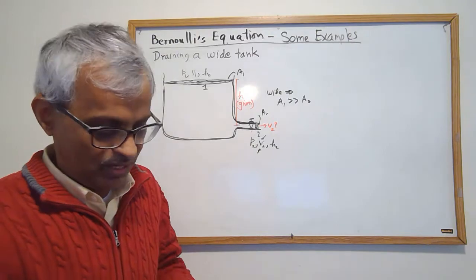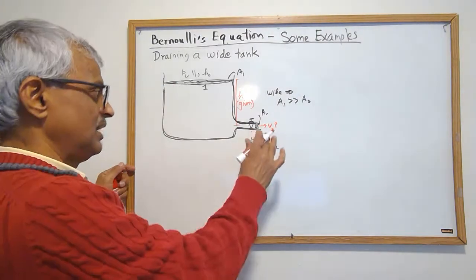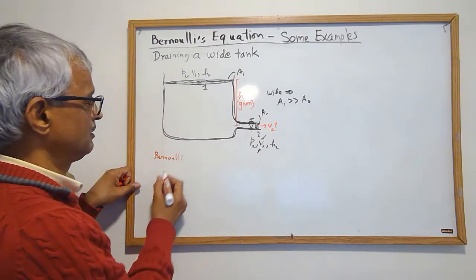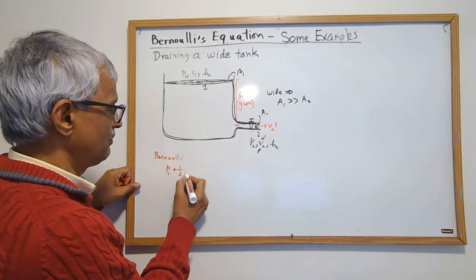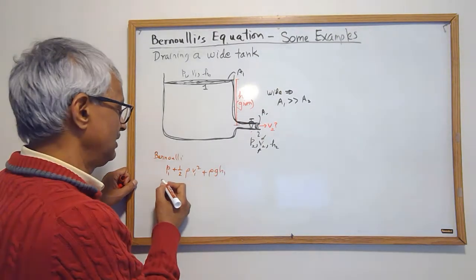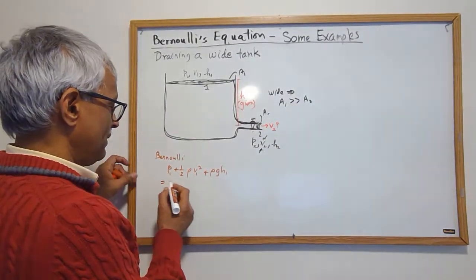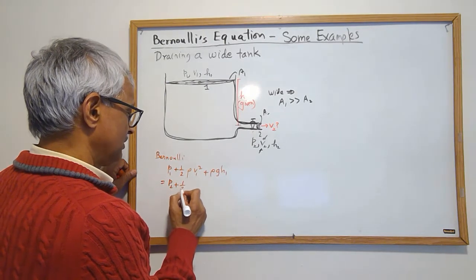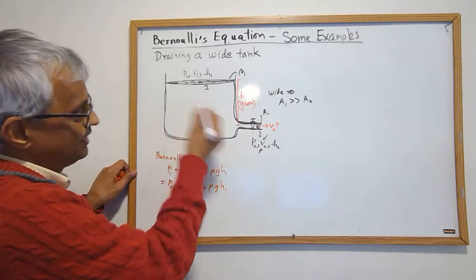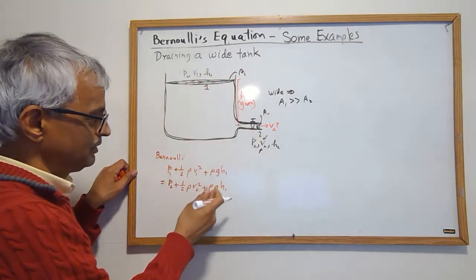Then I know in Bernoulli I will have a combination of these things that's the same throughout. Bernoulli says that p1 plus half rho v1 squared plus rho g h1 has to be equal to p2 plus half rho v2 squared plus rho g h2. This combo is the same at this point as at that point.